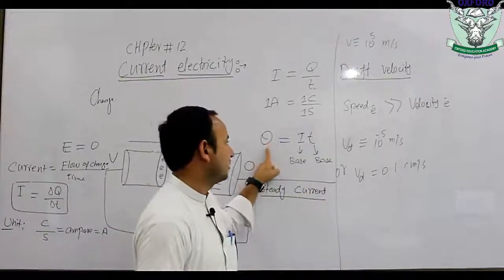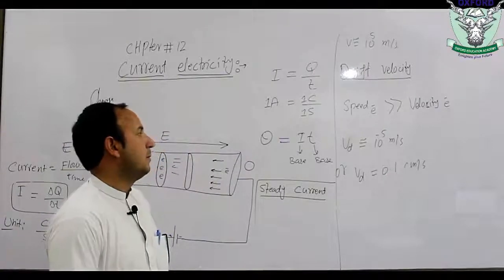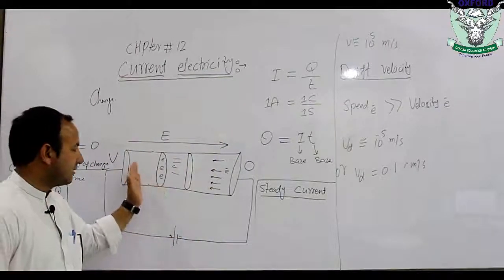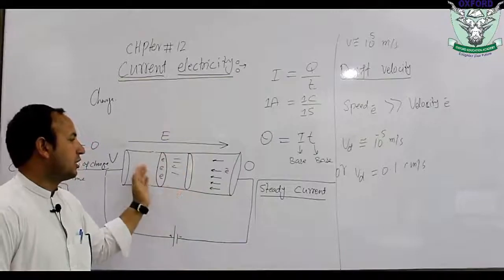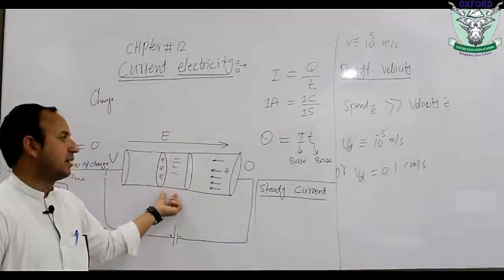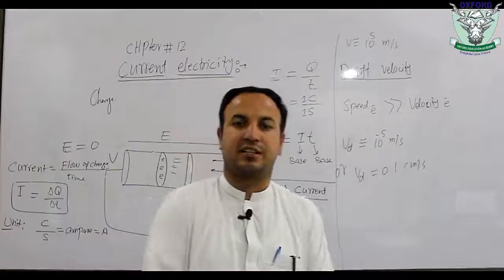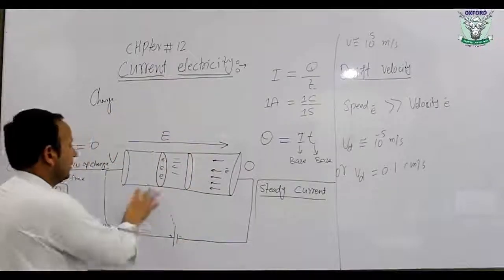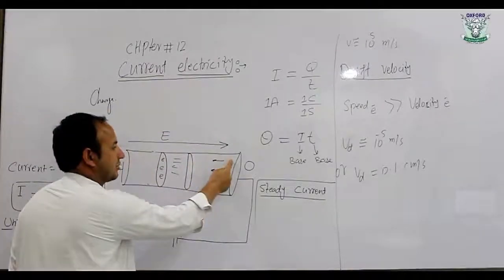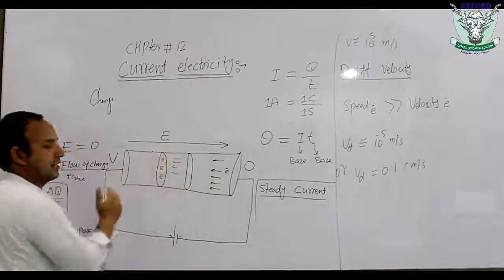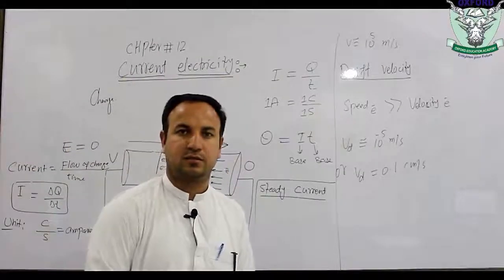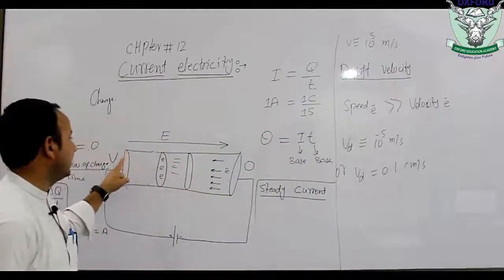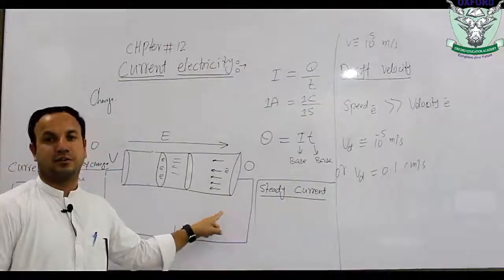In a conductor where charge continuously flows, we have a steady current — electrons flowing continuously. The direction from negative to positive is called electronic current, which is the actual current. The conventional current flows from positive to negative.